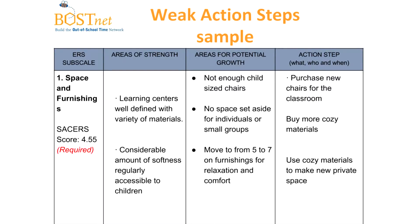Let's look at these examples of weak action steps. Here we have an example of a CQI plan from a school-age program from the SACR space and furnishings section. They had an average score of 4.55 across their three classrooms. Their areas of strength were that learning centers were well-defined with a variety of materials and a considerable amount of softness regularly accessible to children. Areas for potential growth included not enough child-sized chairs, no space set aside for individuals or small groups, and wanting to move from a five to a seven on furnishings for relaxation and comfort.